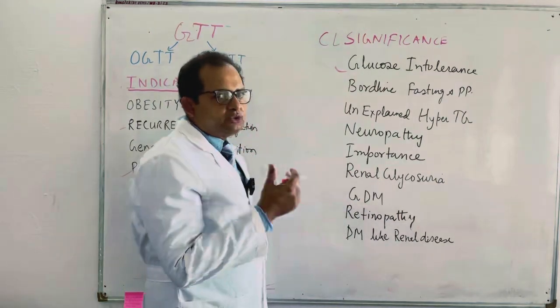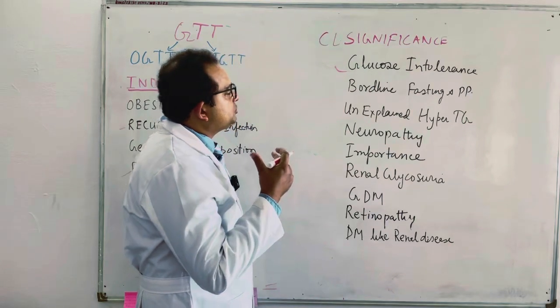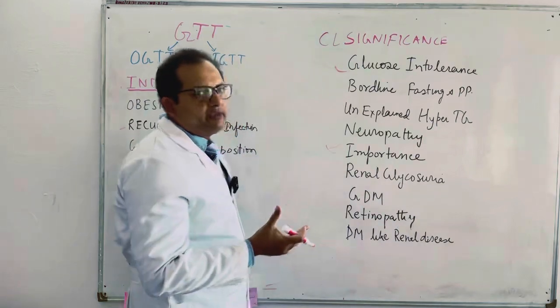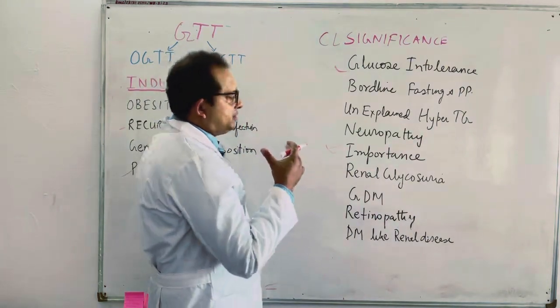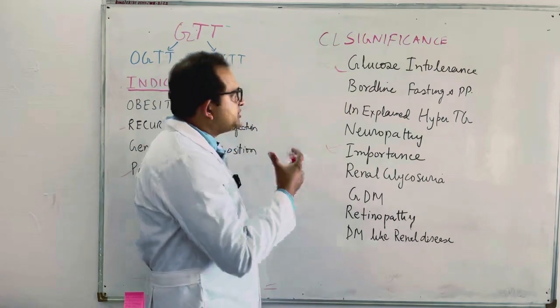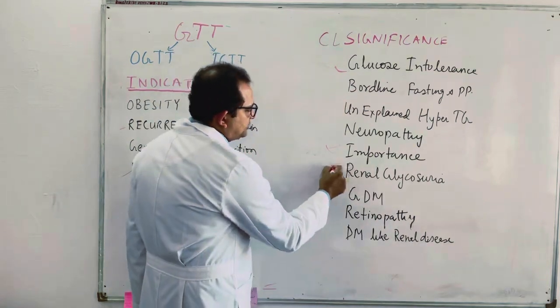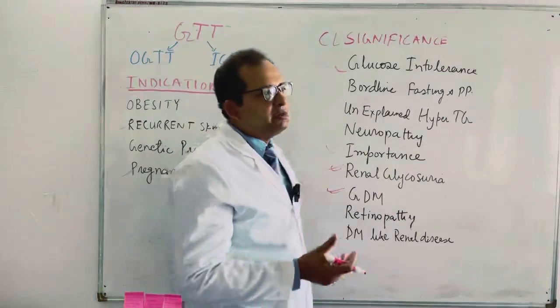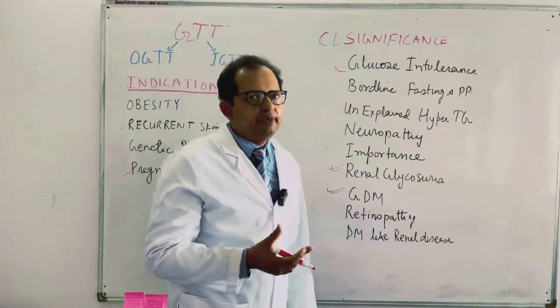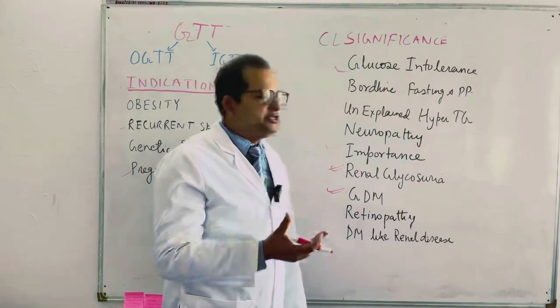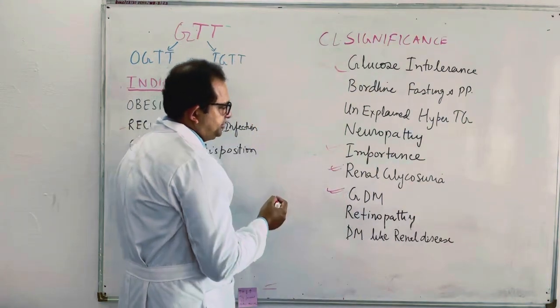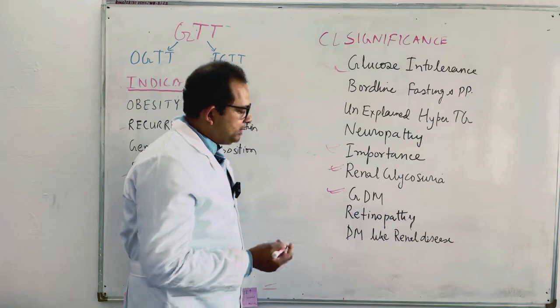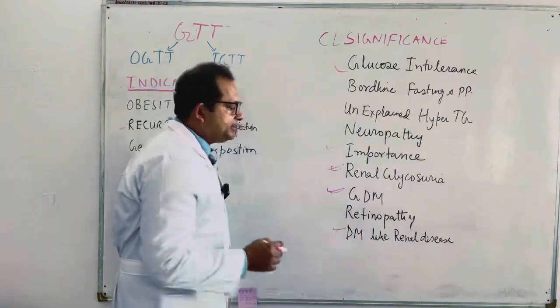Neuropathy is also one of the criteria to get the GTT done. Impotence of unknown reason, then we have to find out diabetes mellitus by considering the GTT test. Renal glycosuria, same thing, and GDM. If someone has family history of GDM or previous pregnancy with GDM, then we will go for OGTT. Retinopathy, and last but not least is DM-like renal disease.